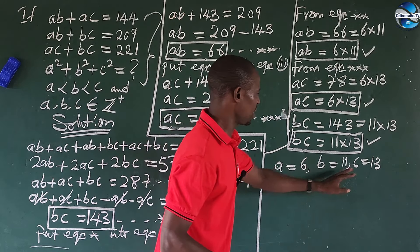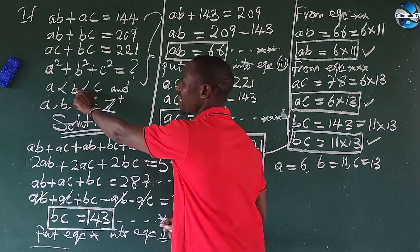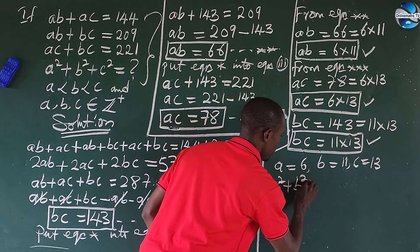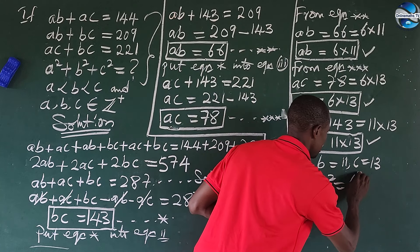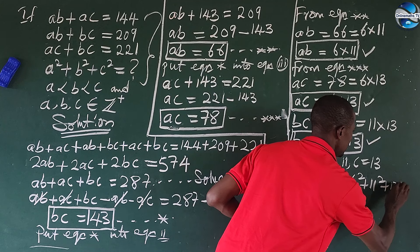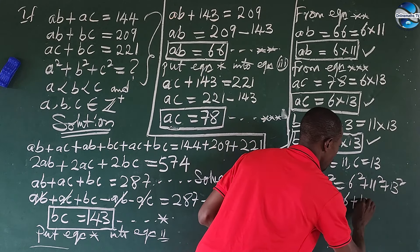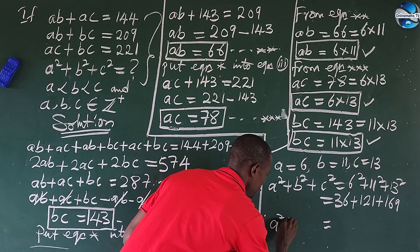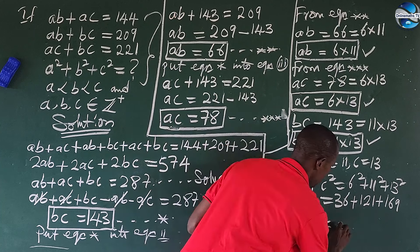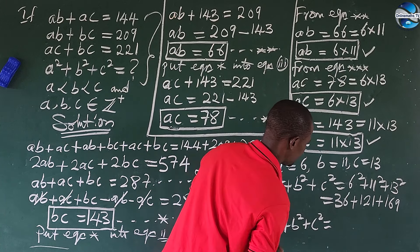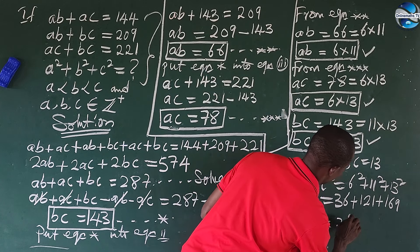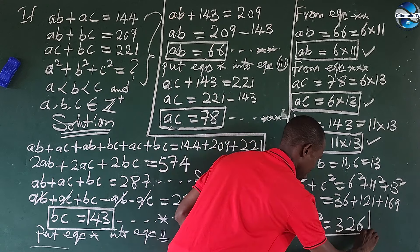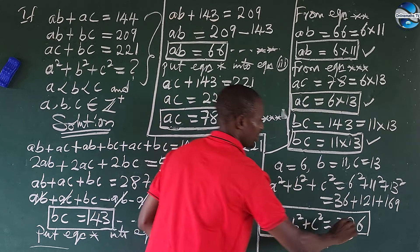So how do we now get A squared plus B squared plus C squared? It's very easy. A squared plus B squared plus C squared equals 6 squared plus 11 squared plus 13 squared, which gives us 36 plus 121 plus 169. Adding everything together, A squared plus B squared plus C squared equals 326. This is the answer to our algebraic math problem.